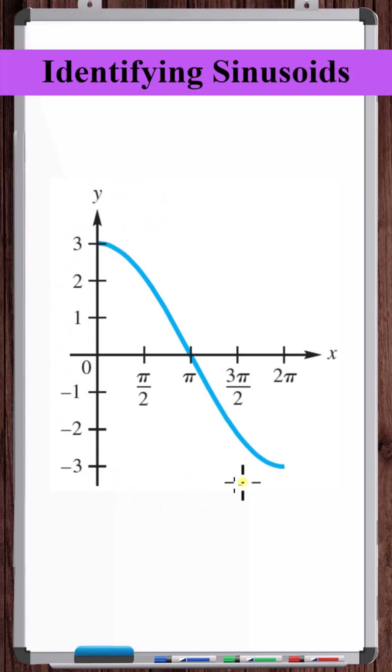Let's identify the equation of the sinusoid shown here. We can see that at x equals 0, the function is at the positive amplitude, which is representative of a cosine curve that hasn't been flipped about the x-axis. So the function is going to be a cosine.